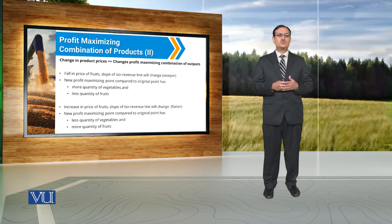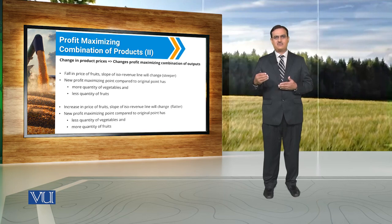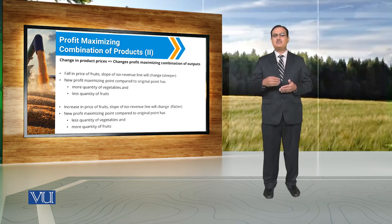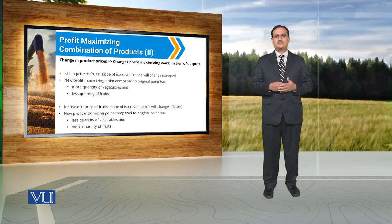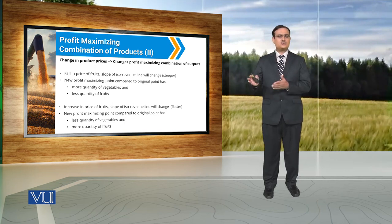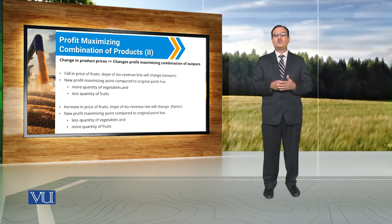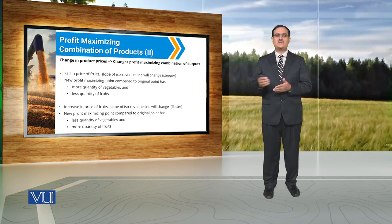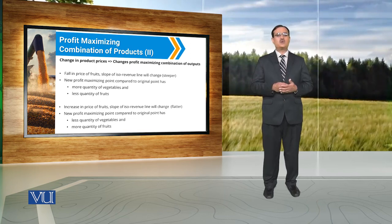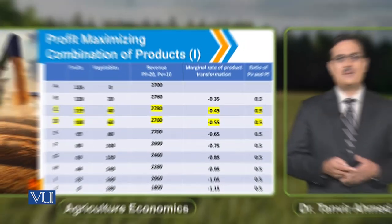If we assume that there is an increase in the price of fruits, the slope of the ISO revenue curve will again change — in this case it will become flatter. Because of the increase in price of fruits, the farmer has to reshuffle resources to produce fruits and vegetables.